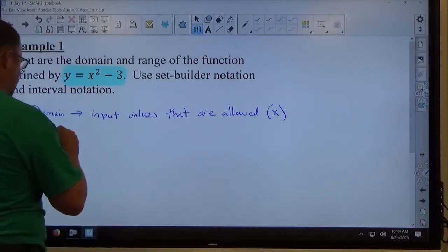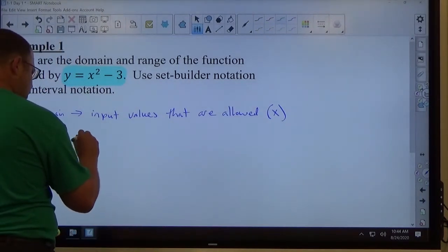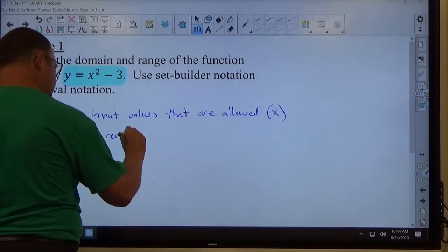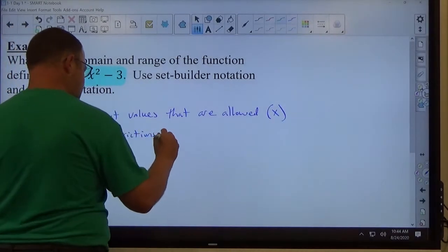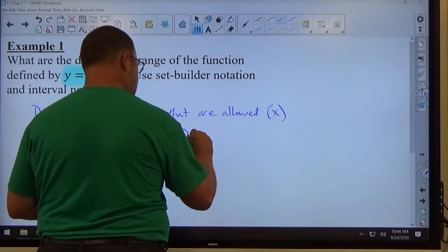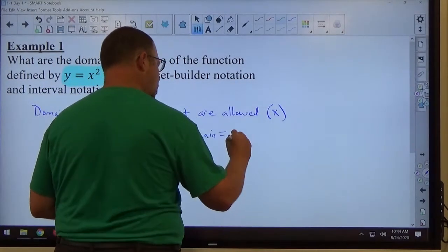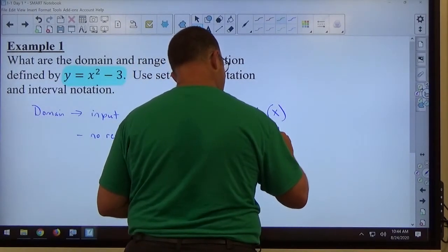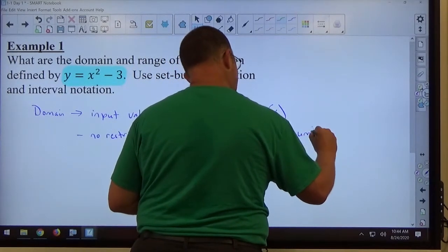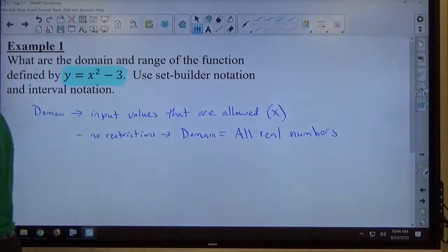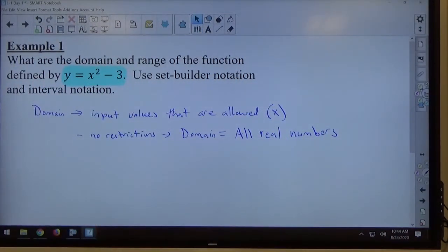When that happens, so if there's no restrictions, domain equals all real numbers. That's the domain a lot of times. We're dealing with some sort of function. I can put any number I want to in. I can put in fractions, decimals, whole numbers, integers, zero, negatives, positives, whatever. All real numbers can be put into this function.